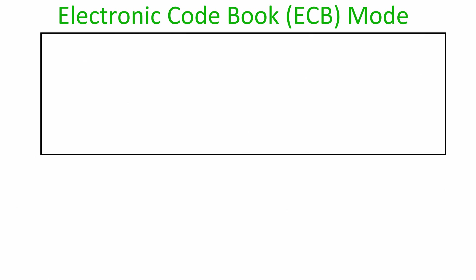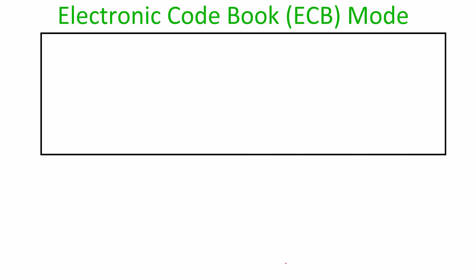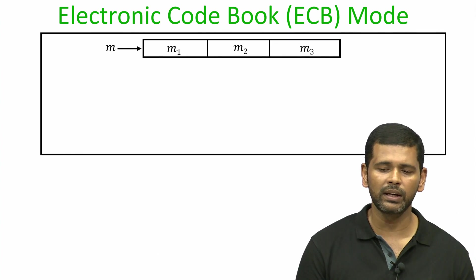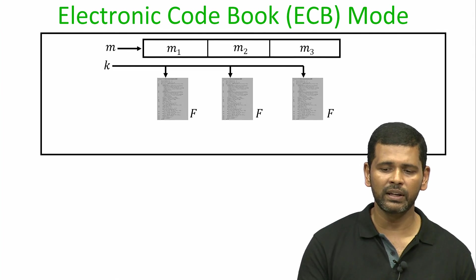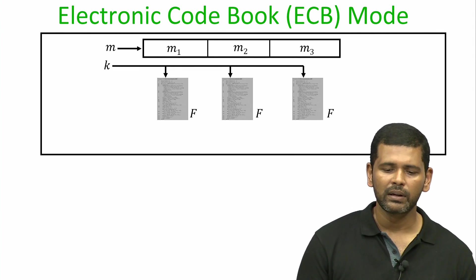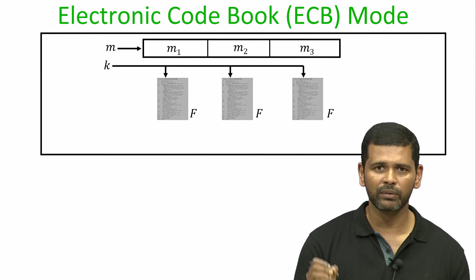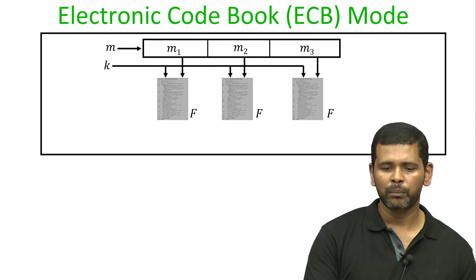Let us see one of the ways of doing that and analyze which properties are achieved. This mode is called the Electronic Code Book, or ECB in short. To demonstrate, imagine a message consisting of 3 blocks of big L bits. In ECB mode, all 3 blocks are encrypted using the same key k with 3 invocations of the underlying function f.